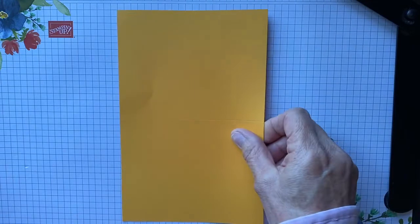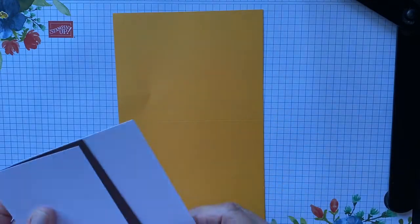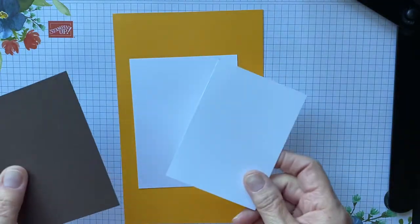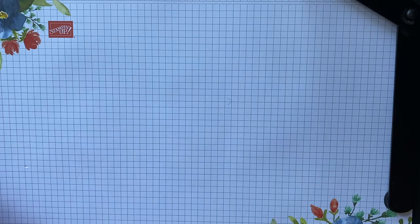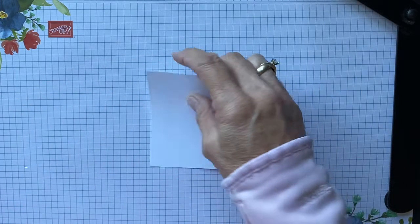The supplies that we're going to be using: we will be using a Mango Melody card base, two pieces of Basic White and a piece of Early Espresso. We will also be using dies from the set, and let me get started and show you how to make the card.